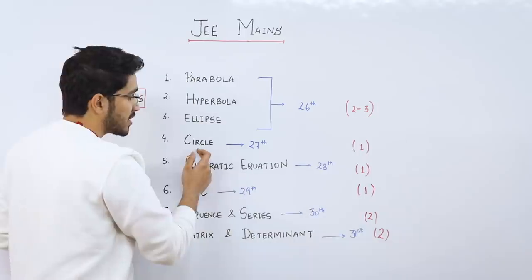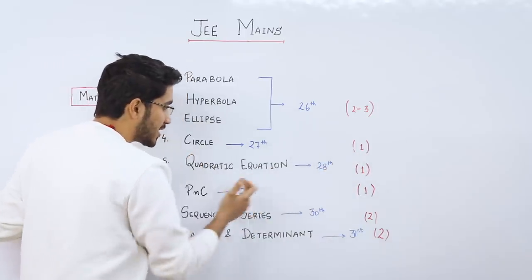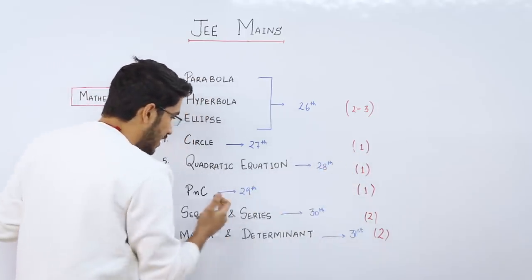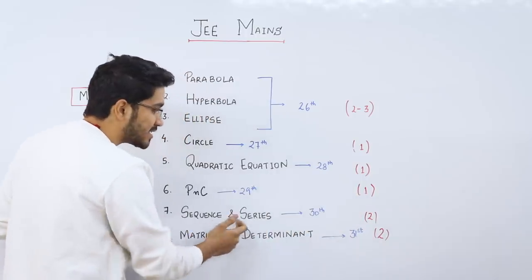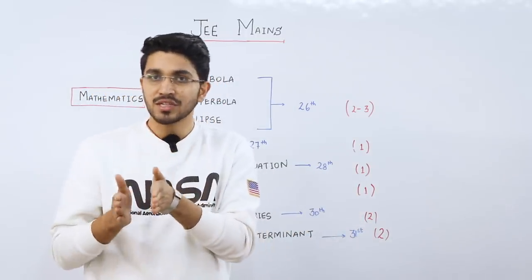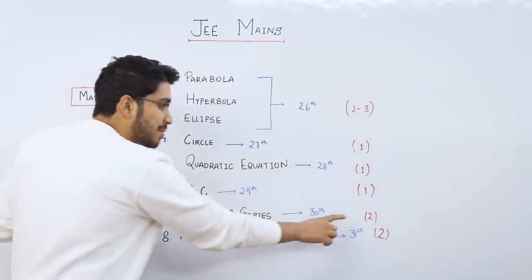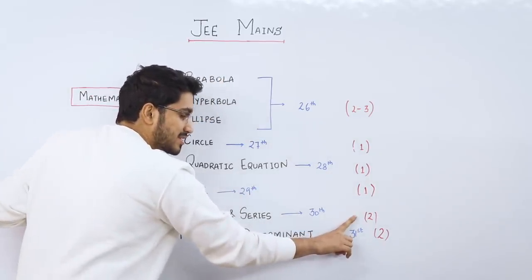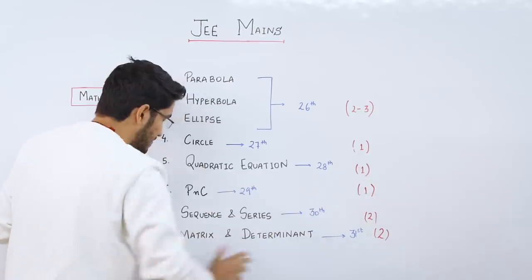If you look at these three chapters, you will have 2-3 questions. Circle, one question is guaranteed. Quadratic equation is guaranteed. PNC is guaranteed. Sequence and series, we always ask 2 questions. But now, since there are 30-25 questions, you will have a minimum of 1 question. I have considered one. If you have 2 questions, then you will have 2 questions.